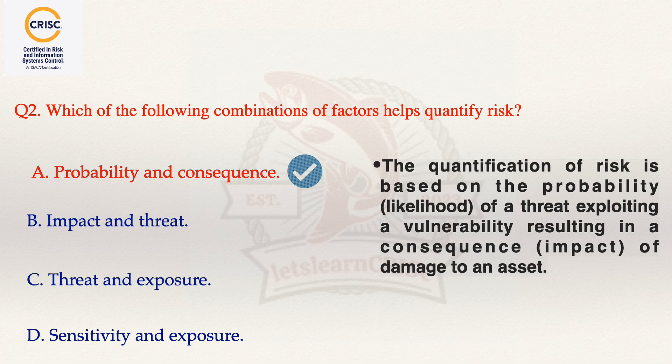Moving next to option D, that is sensitivity and exposure. Sensitivity is a measure of the impact that improper disclosure of information may have on an enterprise, whereas exposure is the potential loss to an area due to the occurrence of an adverse event, but this combination is not used to quantify the risk. That's why option A is correct.